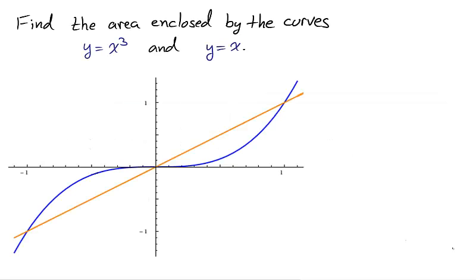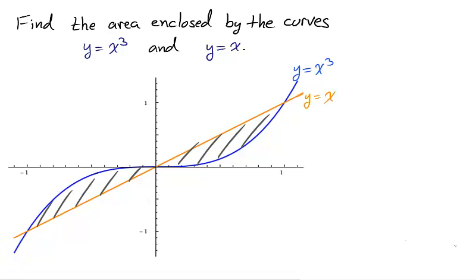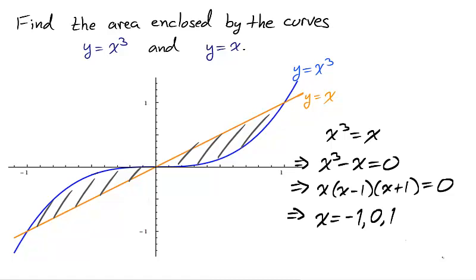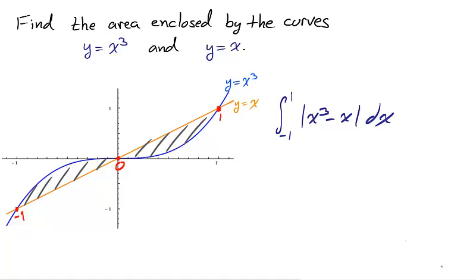Let's find the area enclosed by the curves x and x-cubed. The enclosed area is the area completely enclosed by the curves. It may appear that the red areas are enclosed by the curves, but the curves never meet again, so the red areas are not completely enclosed. To determine the bounds of the shaded regions, we must determine the values for which the curves intersect. Setting x-cubed equal to x and solving for x, we subtract and factor completely to find x equals negative 1, 0, and 1. The area of the shaded region is found by taking the absolute value of the difference of the two functions, x-cubed and x, on the interval from negative 1 to 1.